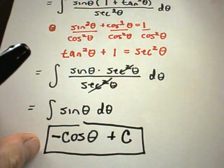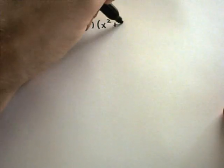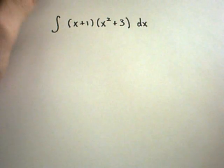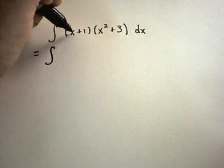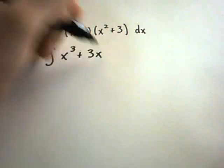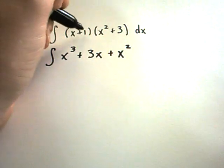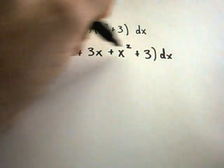Let's do one more. Suppose we have (x plus 1) times (x squared plus 3). The same idea applies: you can't just find the anti-derivative of each piece. First do some algebra and multiply it out. x times x squared is x cubed; x times 3 is 3x; 1 times x squared is x squared; 1 times 3 is 3. There are no like terms to combine, so we integrate as-is.